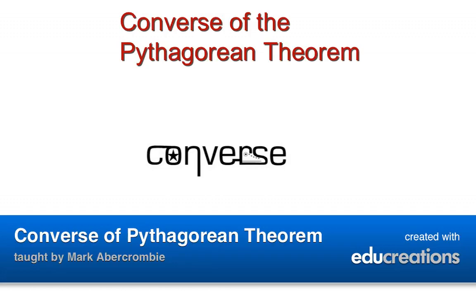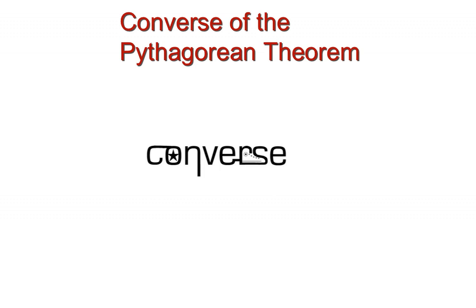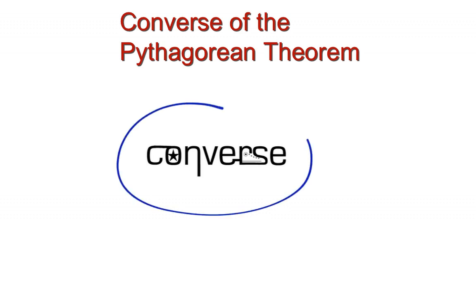The converse of the Pythagorean Theorem is just another theorem that states something almost exactly like the Pythagorean Theorem does. When we say converse, we're not talking about the shoe brand. What we're talking about is a rearrangement of the if-then statements.